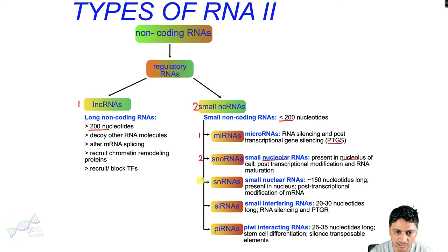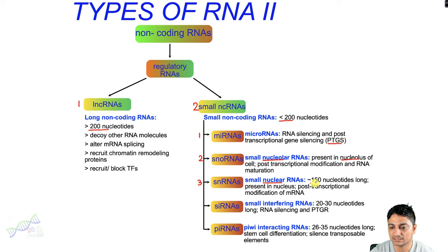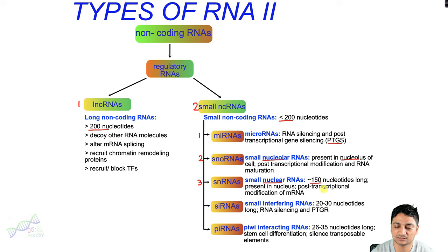The third type of small non-coding RNAs are the small nuclear RNAs, or snRNAs. They are present in the nucleus of the cell and are around 150 nucleotides long. They are also responsible for post-transcriptional modification of messenger RNAs.